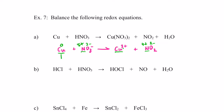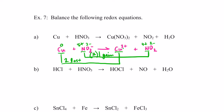Step three — balance electrons lost with electrons gained. Copper goes from zero to positive two, so two electrons were lost. The nitrogen goes from positive five to positive four, so one electron was gained. Two and one are not the same number, so electrons lost and gained do not balance. I need to double the number of nitrogen-containing species so that I will have two gained and two lost. I'm going to double the number of nitrates and double the number of NO2s. So now I have two nitrogens each gaining one electron for a total of two electrons gained, which balances my two electrons lost.